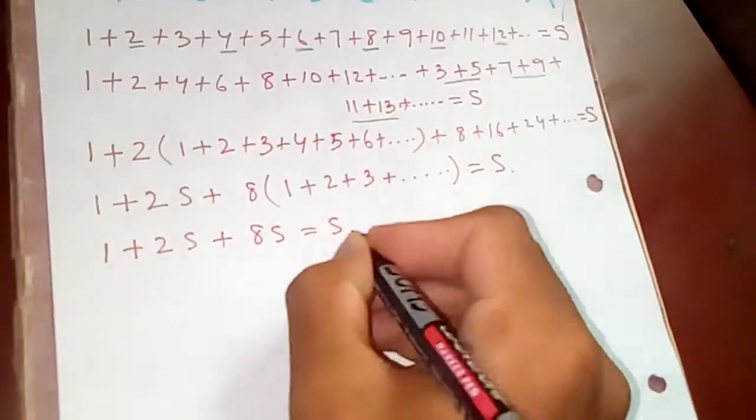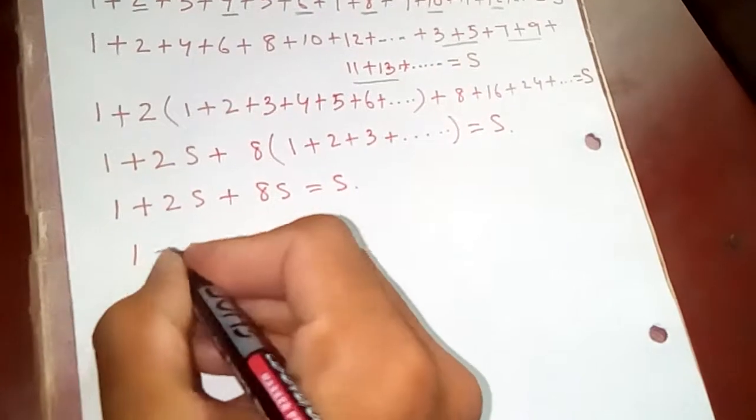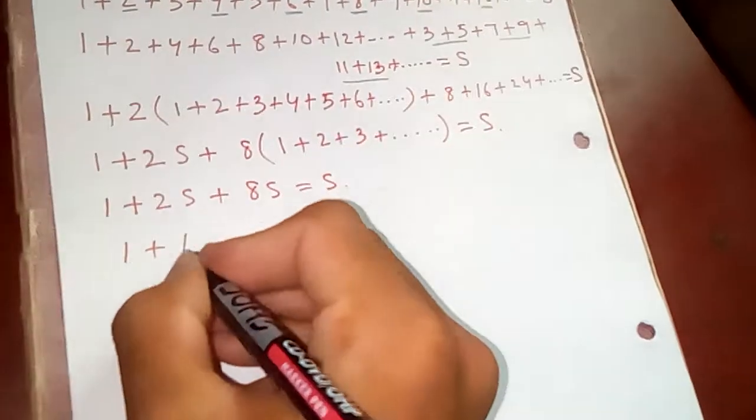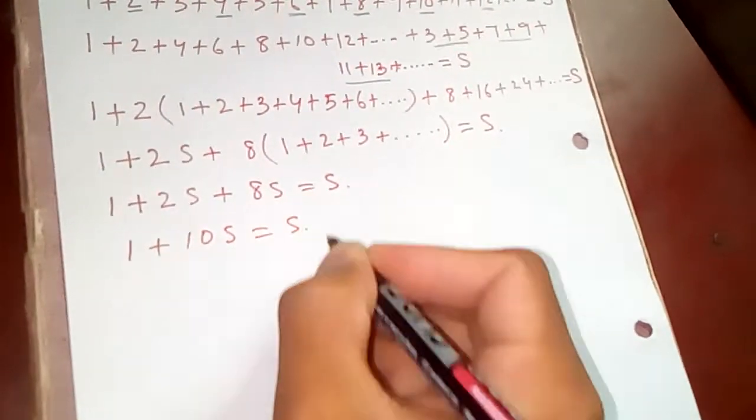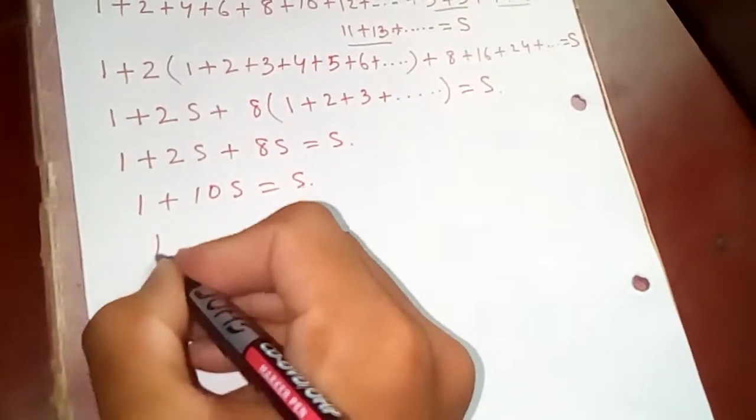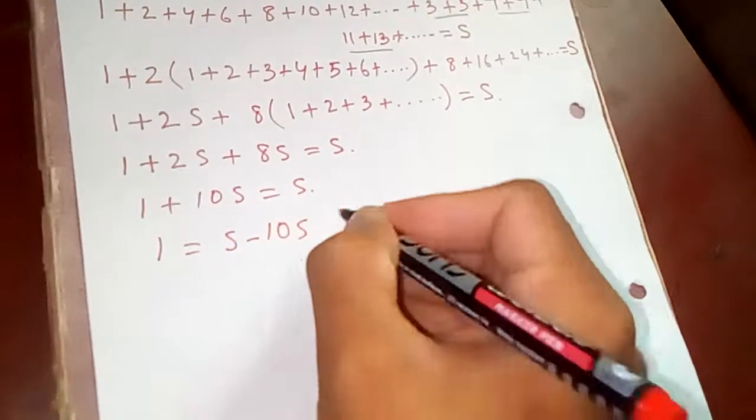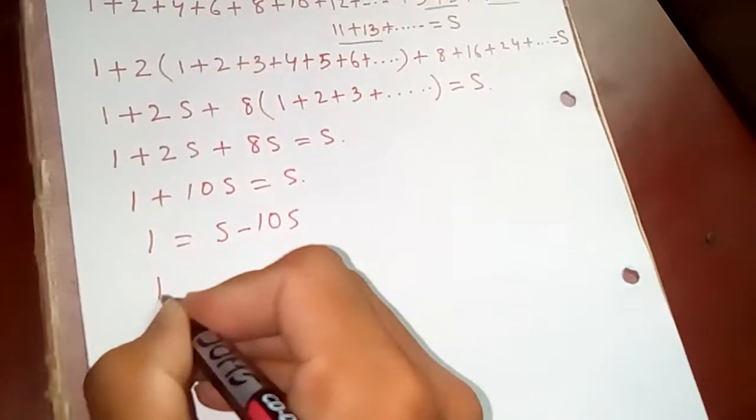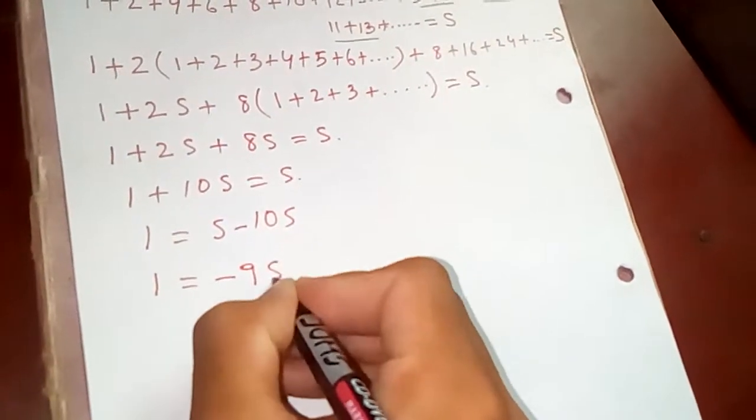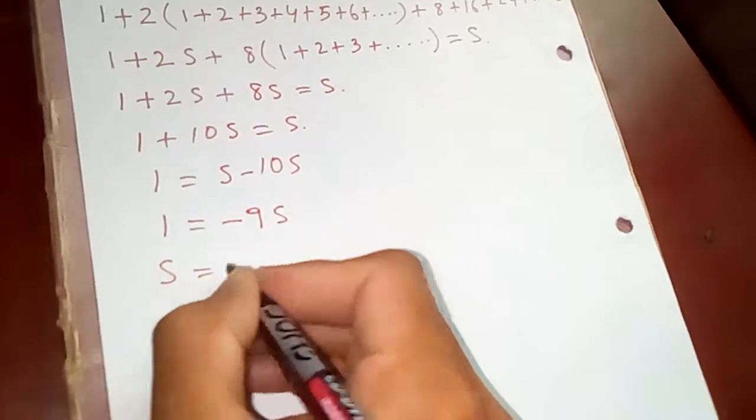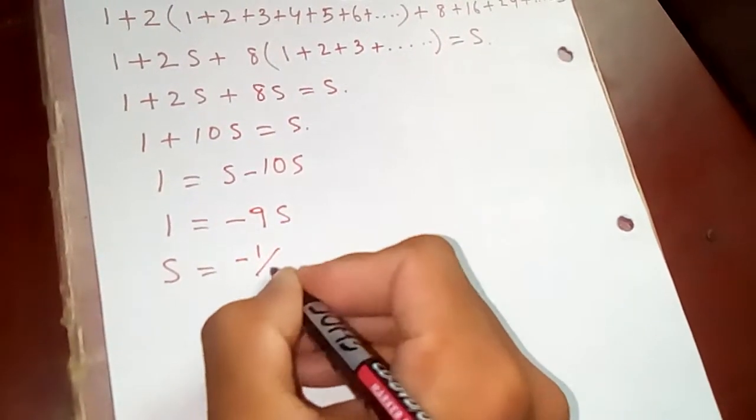One plus 10S is equal to S. So one equals, if you transfer the S, minus 10S. Wait, correction: one plus 2S plus 8S, so one plus 10S equals S. So this will give one equal to minus 9S.